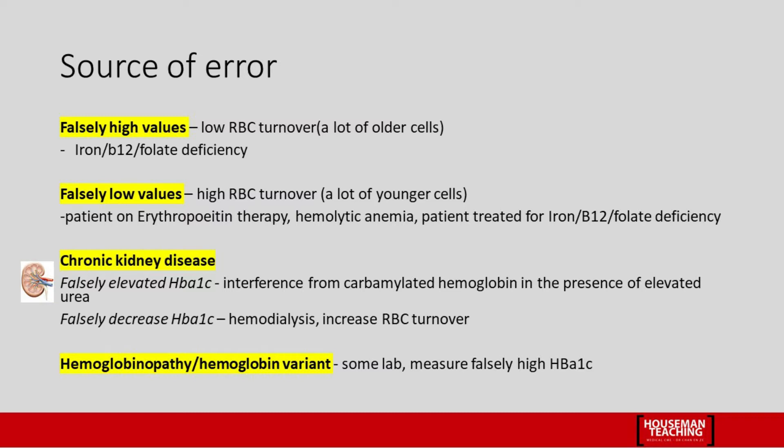HbA1c depends a lot on the red blood cell and its lifespan. You get a falsely high HbA1c when there is low red blood cell turnover, because there are a lot of older cells. This is seen in iron deficiency anemia, B12 deficiency, and folate deficiency. You also see falsely low values of HbA1c when there is high red blood cell turnover — meaning a lot of younger cells — as seen in those on erythropoietin therapy, hemolytic anemia, or patients on treatment for iron, B12, or folate deficiency.